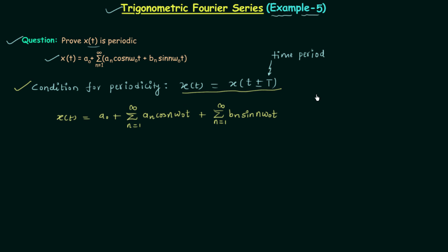To prove that signal Xt is a periodic signal, I will consider the case of left shifting. This means when you take X(t + T), you are considering left shifting by the amount T, which is the time period of signal Xt. If you get the same signal Xt, this means Xt is a periodic signal. You can also consider right shifting with X(t − T), but for this particular case I will only consider the left shifting.